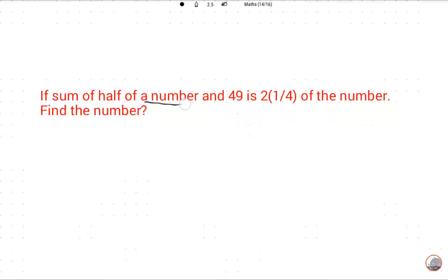So what is the number? We don't know, so we will suppose x. And sum of half of a number, that's 1 upon 2 x, and 49.